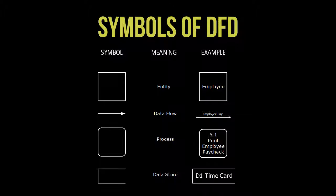The datastore symbol represents the data at rest in the system, or the repository of that data. The repository could be a filing cabinet, a file on a desk, a computer file, or a database table. A data store contains data about a person, place, or department and should be labeled with a noun. Examples of data stores include employee files, applicant files, employee records, and customer or current benefits records.